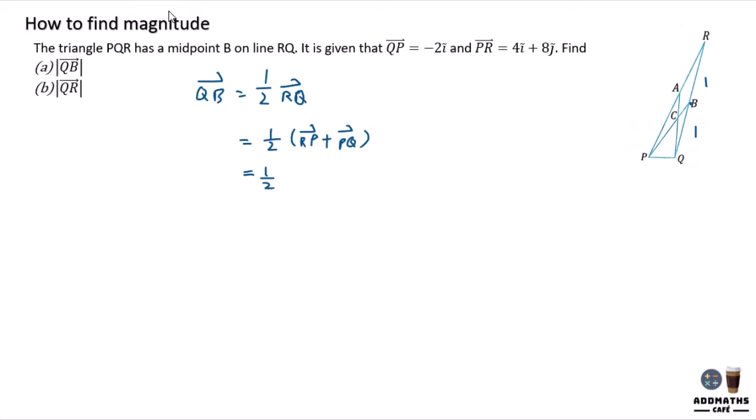The opposite direction, so negative 4i minus 8j, plus PQ which is also the opposite direction, which is positive 2i. So if we add all the i together, it will give negative 2i minus 8j.